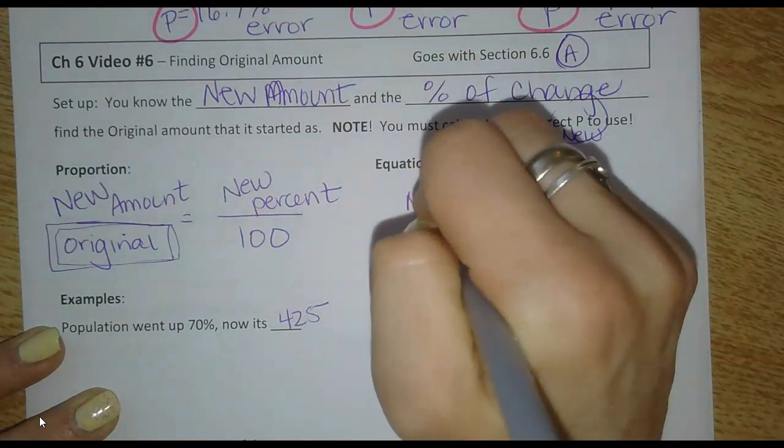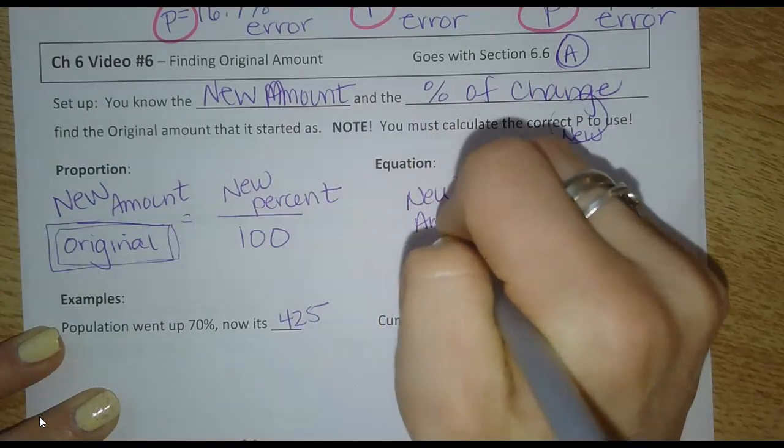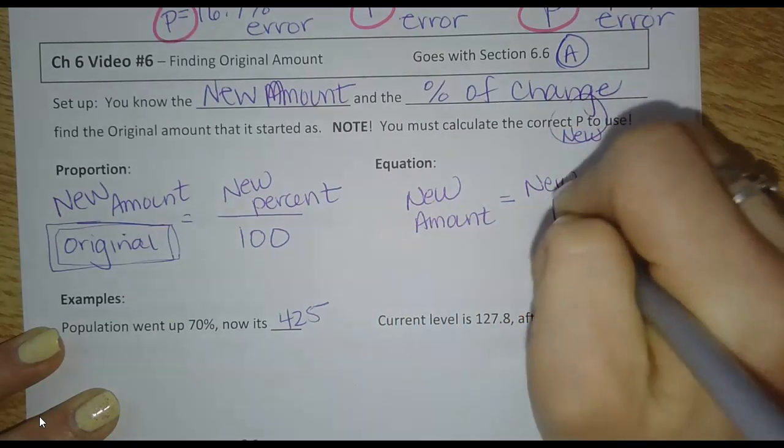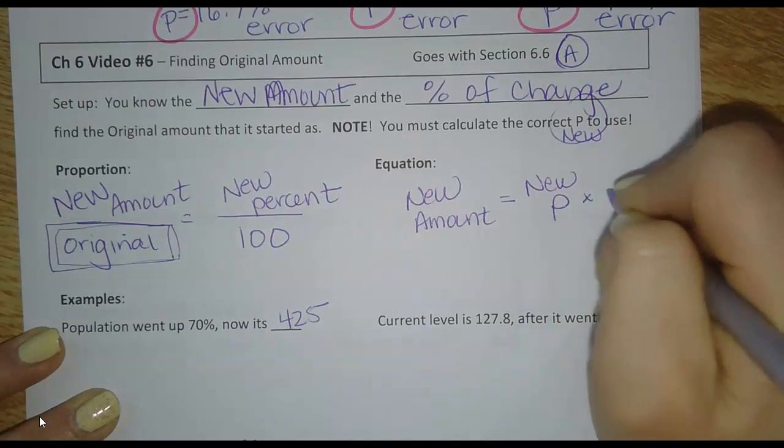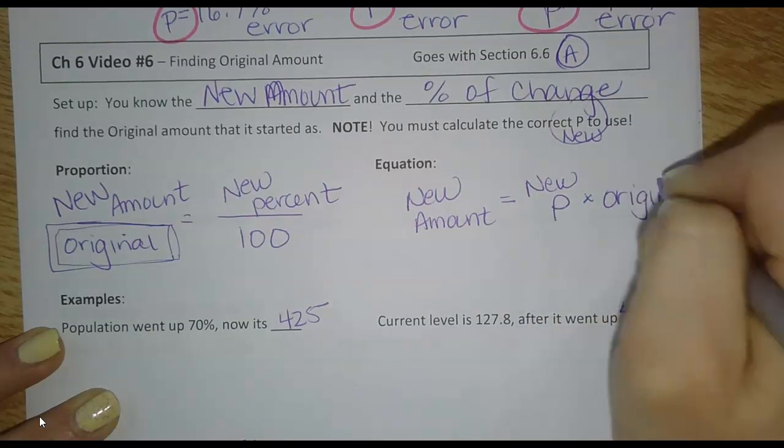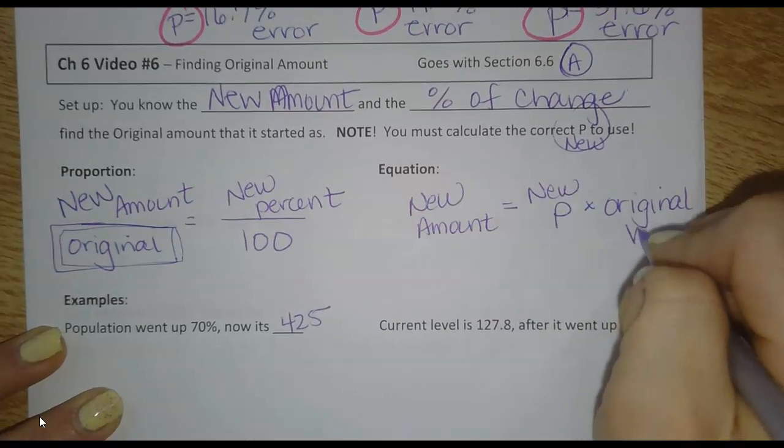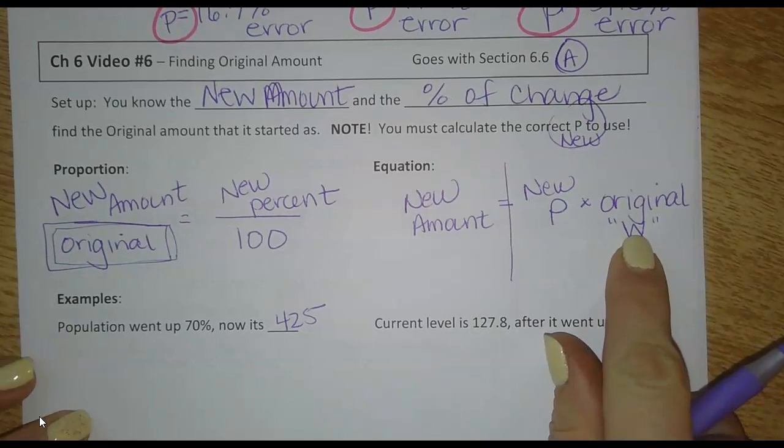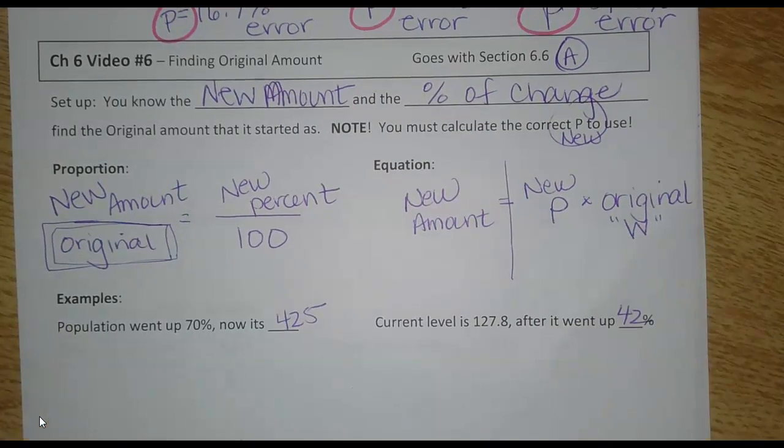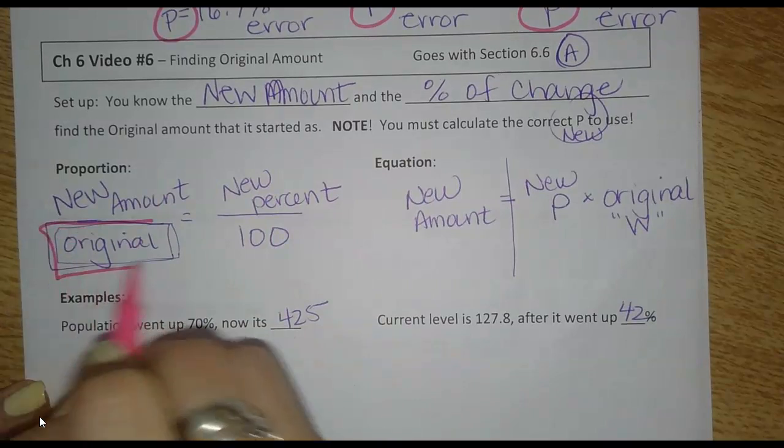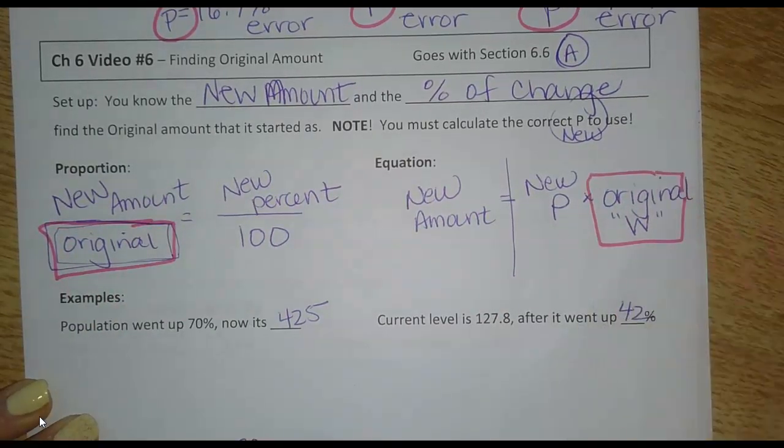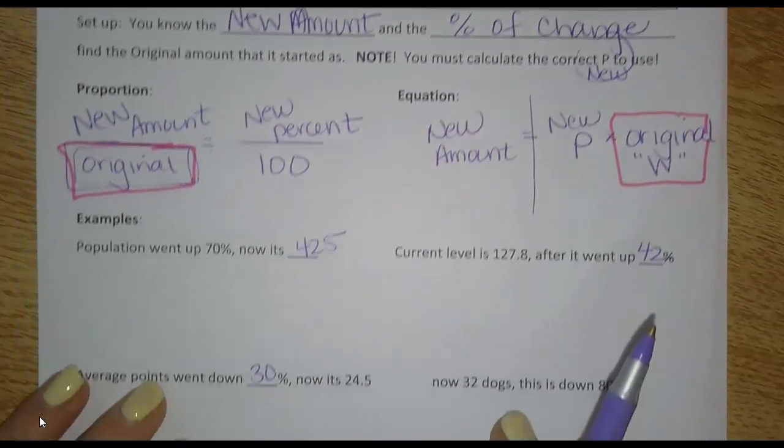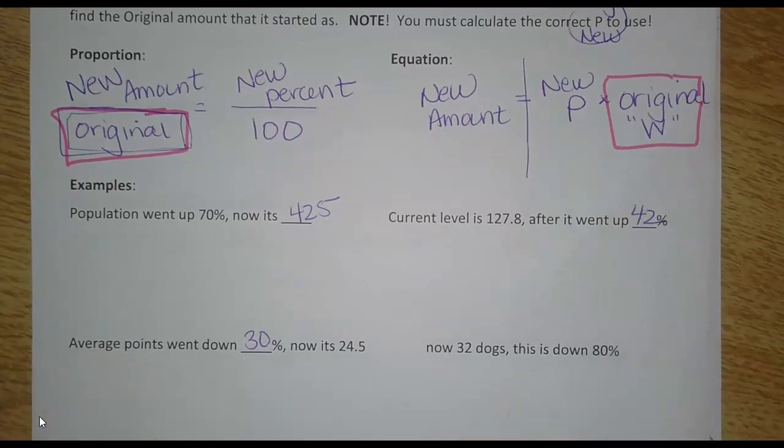In the equation, new amount is equal to the new percent as a decimal times the original. And this is what I'm trying to find. So I'm going to have to solve to get W by itself. So this is what we're looking for, and this is what we're looking for. And like normal, we'll do some examples with the proportion and some with the equation. And then you get to pick.